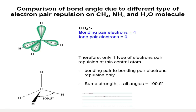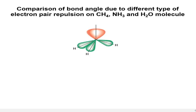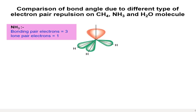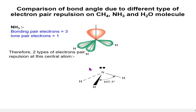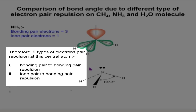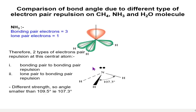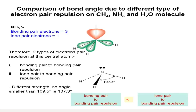In CH4, there are four bonding electrons and there is no lone pair. The electron pairs in the bond are arranged as far apart as possible to minimize the repulsion, so the bond angle is 109.5°. For NH3, there is one lone pair and three bonding pair electrons. Since there is a lone pair, there is lone pair to bonding pair repulsion, which has a greater force of repulsion than bonding pair to bonding pair repulsion, so the bond angle is reduced to 107.3°.